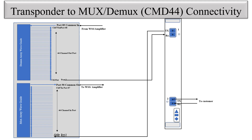So this is the physical connectivity between the Transponder and MUX-DMux. We have seen both the Transponder and MUXponder connectivity to the MUX-DMux using the CMD44 as an example. In the next video we will discuss more MUX-DMux connectivity between the Transponder and MUXponder. Thank you for watching.